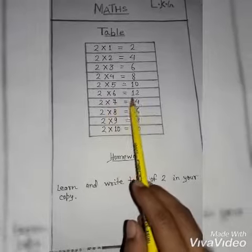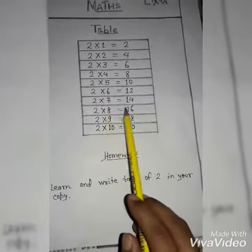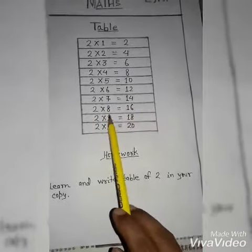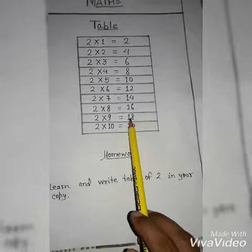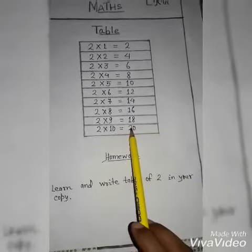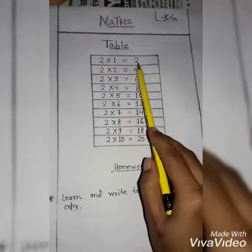2×7=14, 2×8=16, 2×9=18, 2×10=20. Repeat again: 2×1=2.